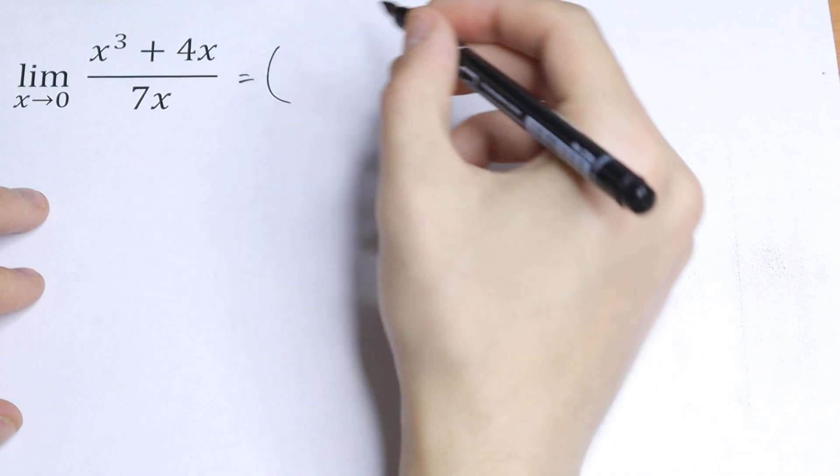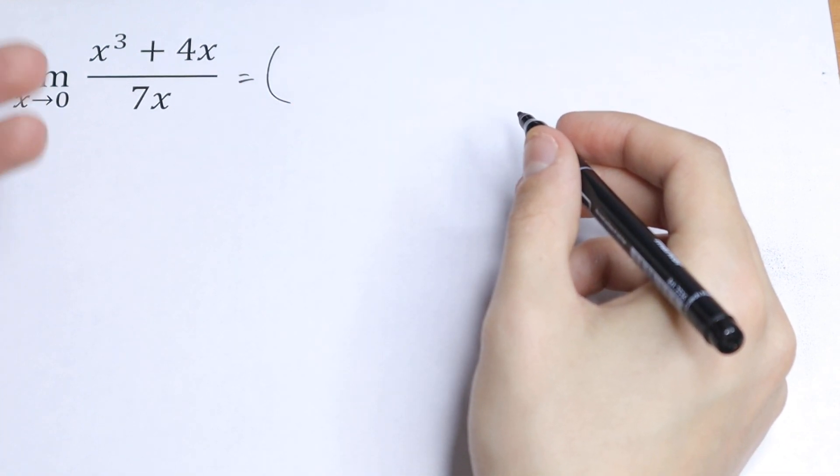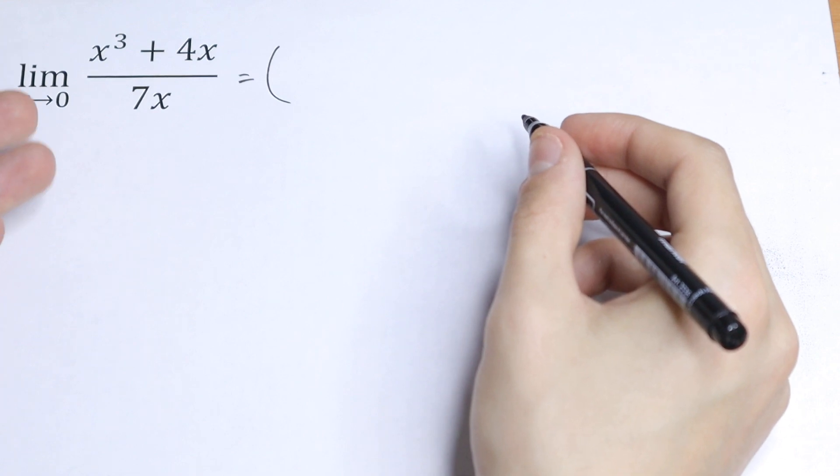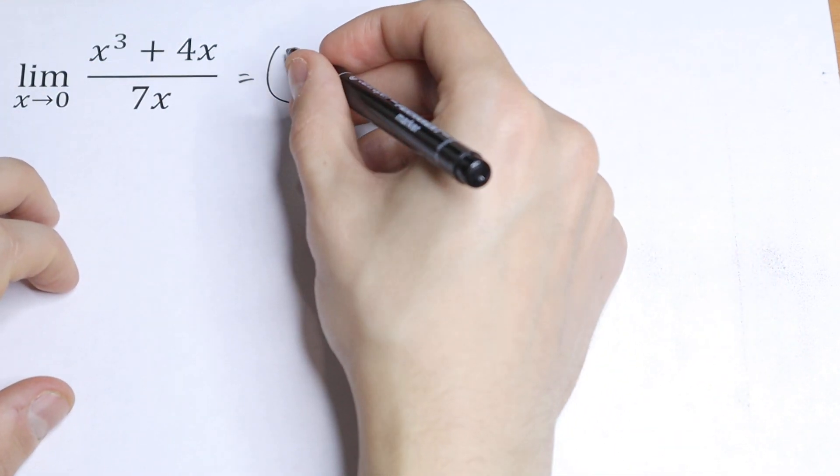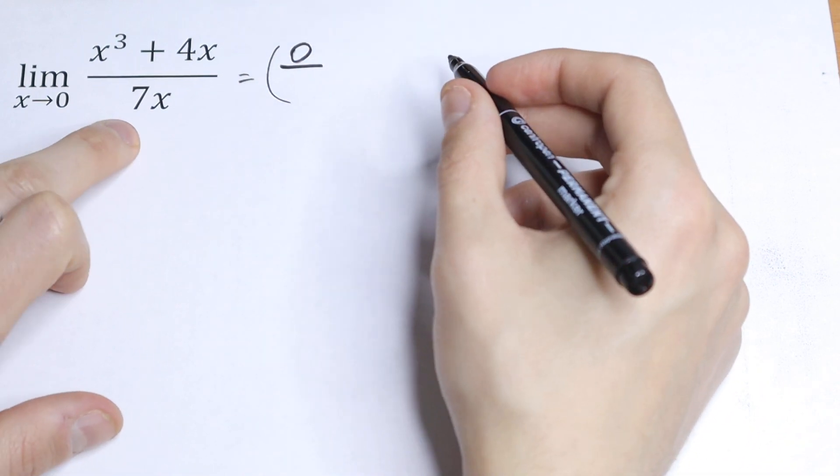So let's use direct substitution at first. I recommend you to use direct substitution every time, and we will see what will happen. If we put 0, we will have 0 plus 0, 0 in our numerator, and in our denominator we will have 0 as well.